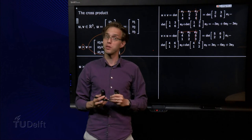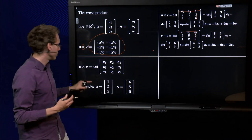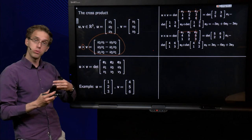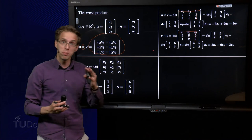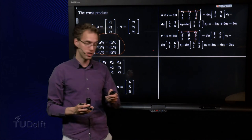u cross v equals minus v cross u. If you remember some rules of determinants, that makes sense. Because if you interchange rows in a determinant, that's basically what you're doing when you compute u cross v instead of v cross u, you pick up a sign. So be careful for cross products: u cross v and v cross u are not the same.